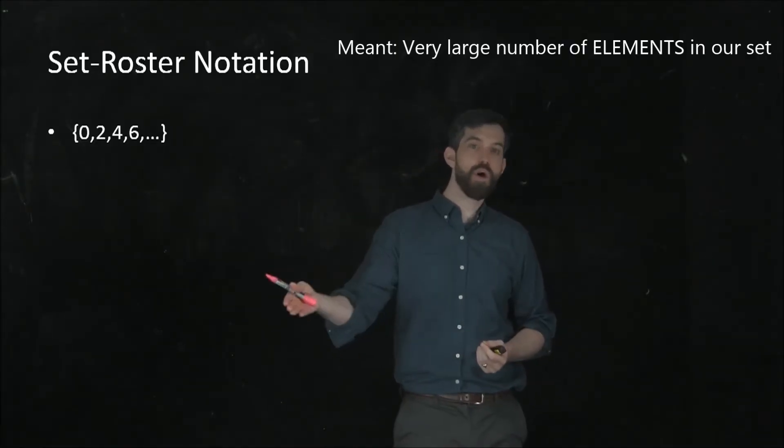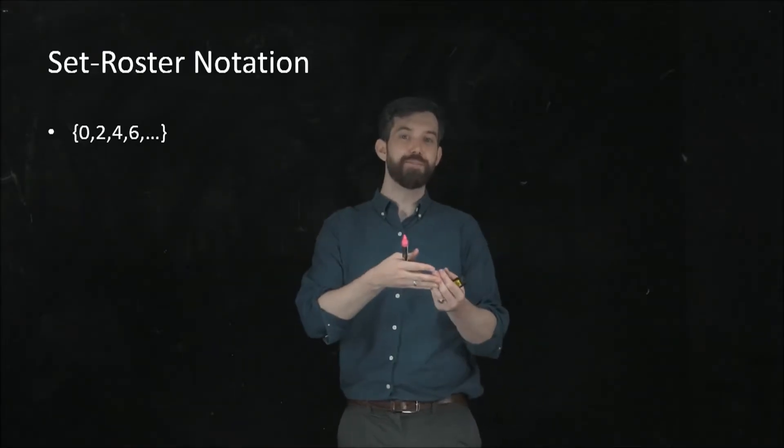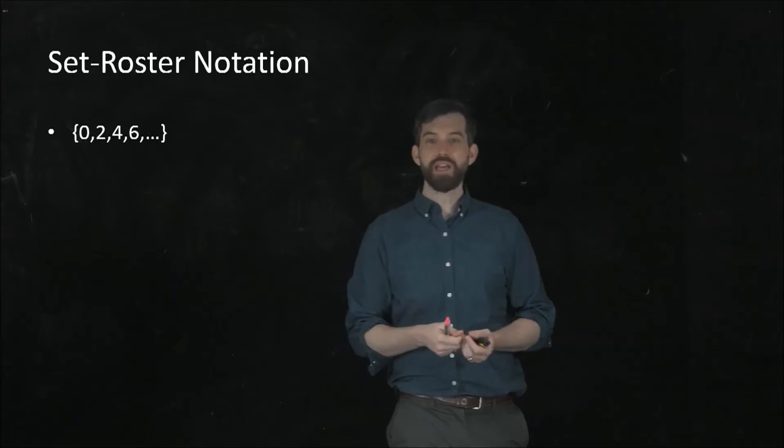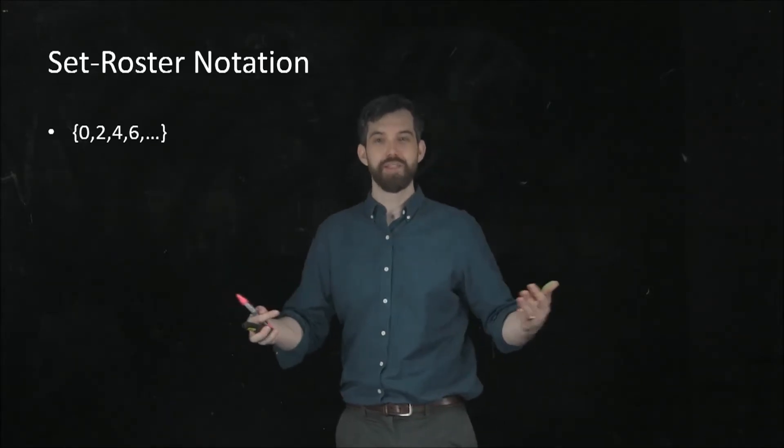So one of the things that we want to do is if there is some clear pattern amongst the elements inside of the set, we can use the ellipsis, the dot dot dot, to indicate that the pattern continues.